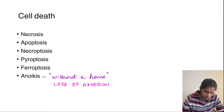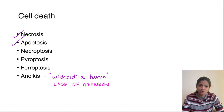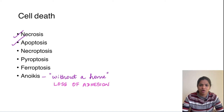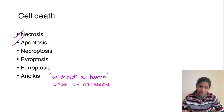We know about necrosis and apoptosis which are the traditional forms of cell death. In the new edition of Robbins 10th edition they updated other forms of cell death like necroptosis, pyroptosis, ferroptosis, and anoikis. These new forms are potential for being asked in MCQ exams. In today's video we'll be reading about necroptosis and pyroptosis. Ferroptosis is related to free radical injury, so we'll read about that in the next video.